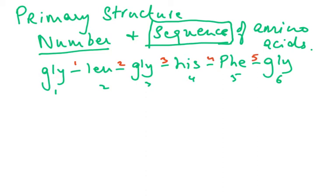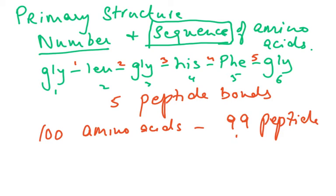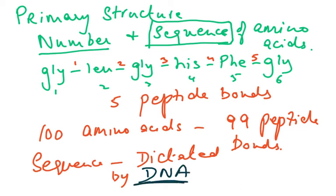The number of peptide bonds is the number of amino acids minus one. So 100 amino acids will have 99 peptide bonds — that's a common MCQ. The primary structure sequence of amino acids is dictated by DNA.